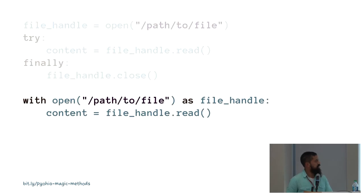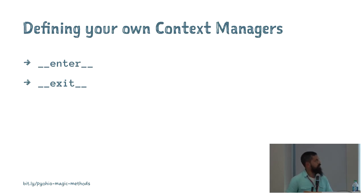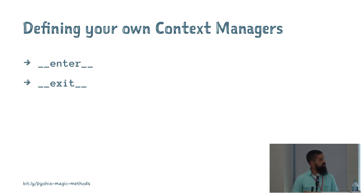An alternate way is to use open as a context manager. When you read the file within the scope of the with statement, open defines a cleanup action that closes the file handle once you exit the context. To define your own context managers, you only need two magic methods: dunder enter and dunder exit. Once implemented, you can use your objects with a with statement. Code in dunder enter executes as you enter the with statement; code in dunder exit executes as you leave — even if an exception was raised.